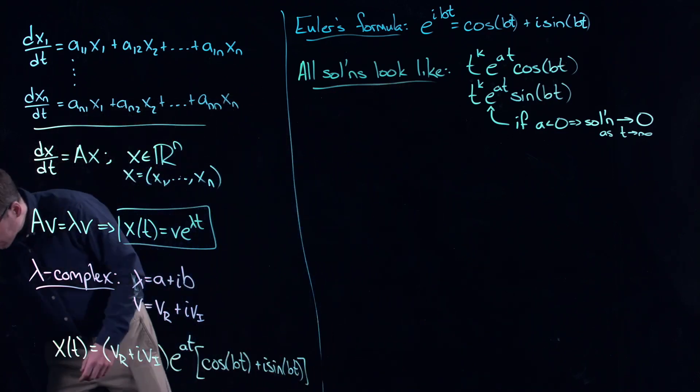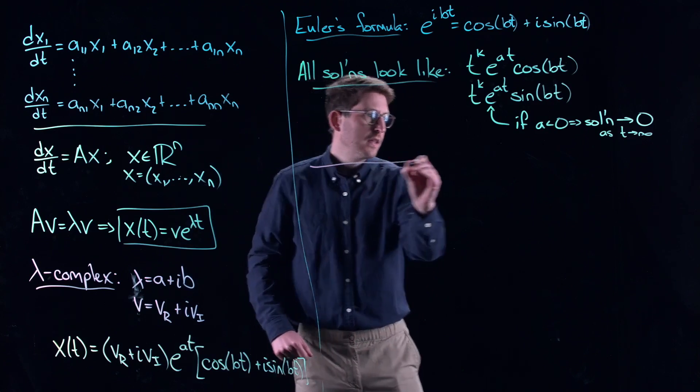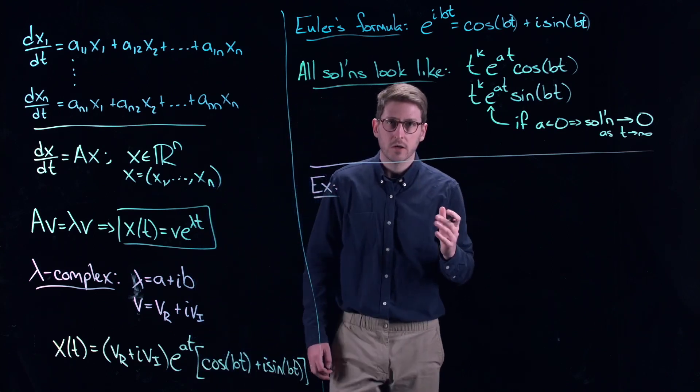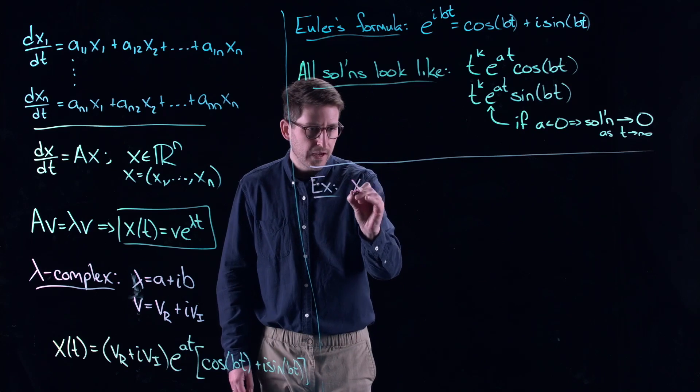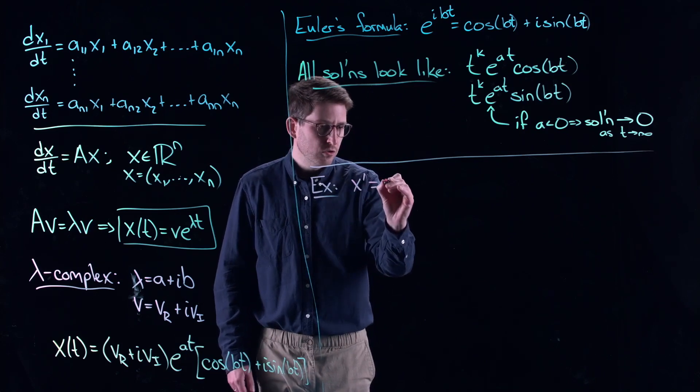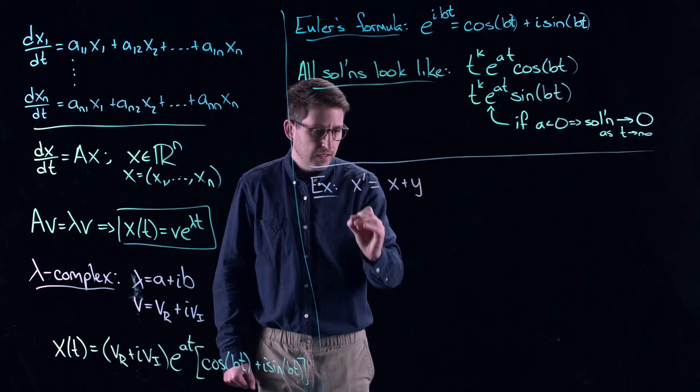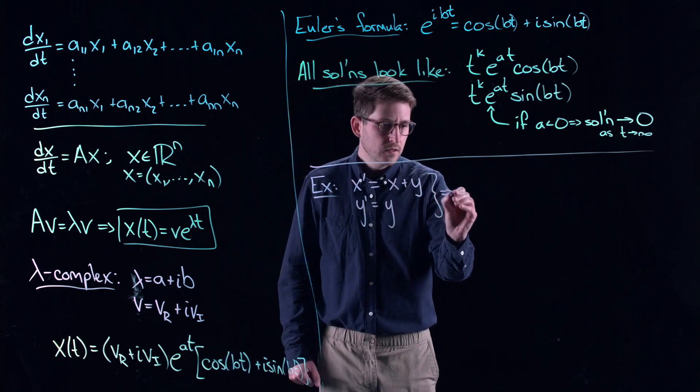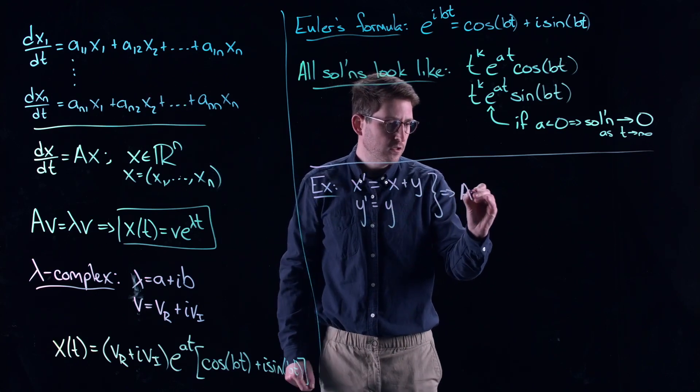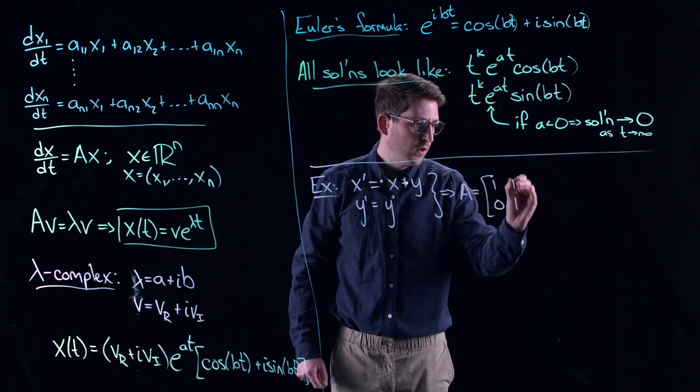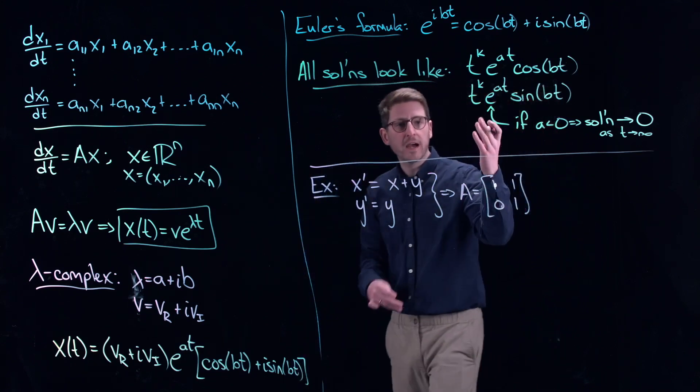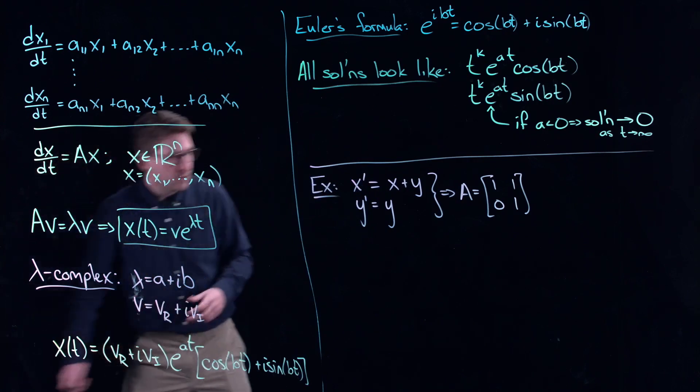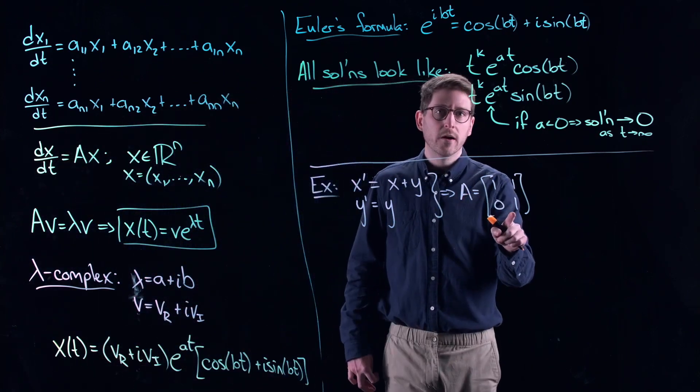So you might be wondering where does that polynomial come from, the t to the power of k. Let me just do an example so that you can see where this comes from and then we can talk through the general situation. Let's imagine you have x' = x + y and y' = y. In this case, if I separate this out into my proper matrix notation, this becomes [[1, 1], [0, 1]]. So a very simple matrix. In fact, it's an upper triangular matrix. You have zeros on the lower diagonal here. And what we know about that is that those are the eigenvalues. 1 and 1 are the eigenvalues of this thing. So this tells me that there's a solution that looks like e^(λt), which is lambda is just 1, e^t.